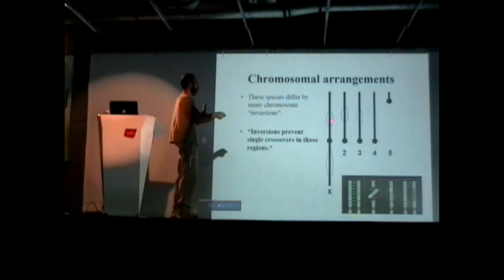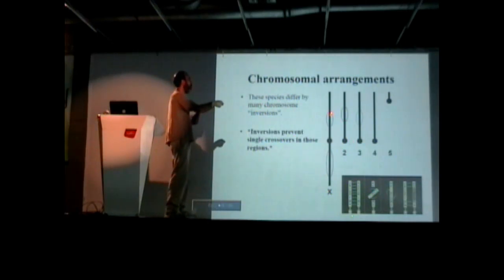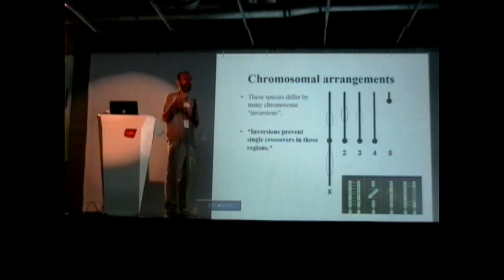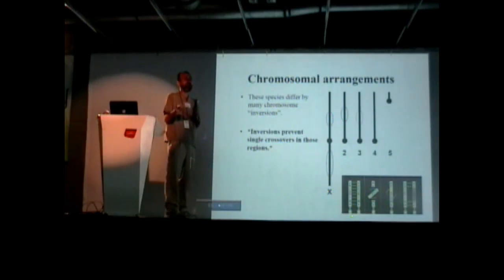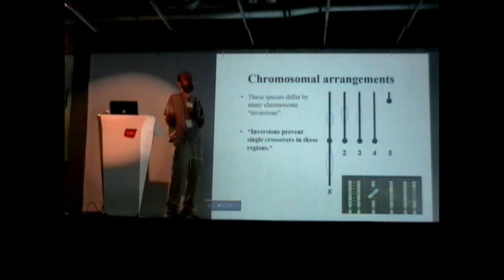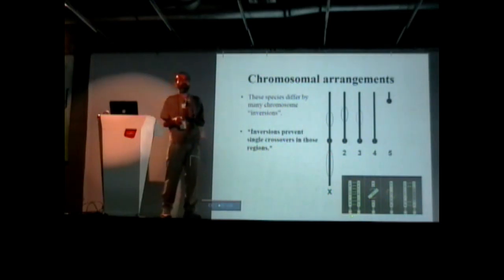However, when you look at the relative size of inverted regions on the X and on the second chromosome, and if you correct for that to see whether there is more of an effect on the X given the difference in size of the inversions, this system comes out about the same. Basically, this inversion and this inversion are about the same size — one's on the X and one's on the autosome. Their effects are almost the same. So we don't really see a large X effect in this system, except for the fact that there are two inversions rather than one on the X chromosome.